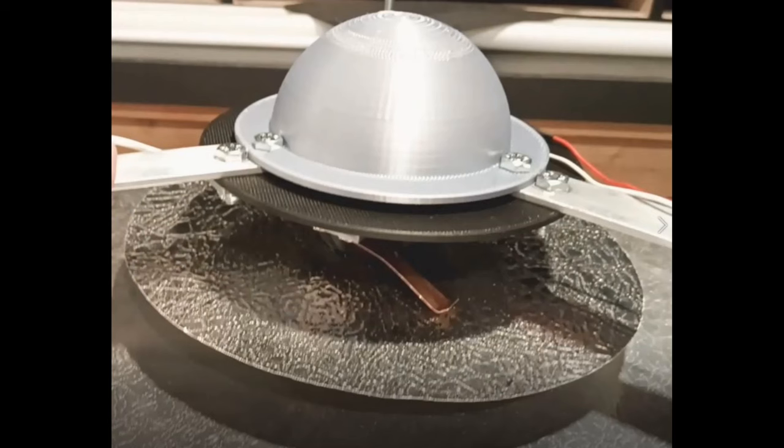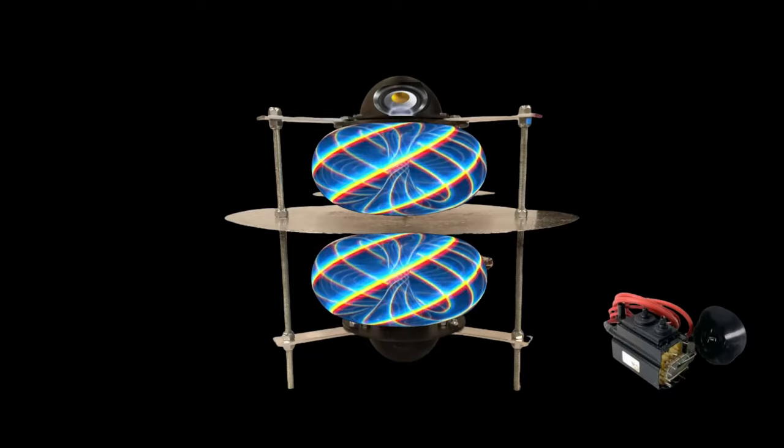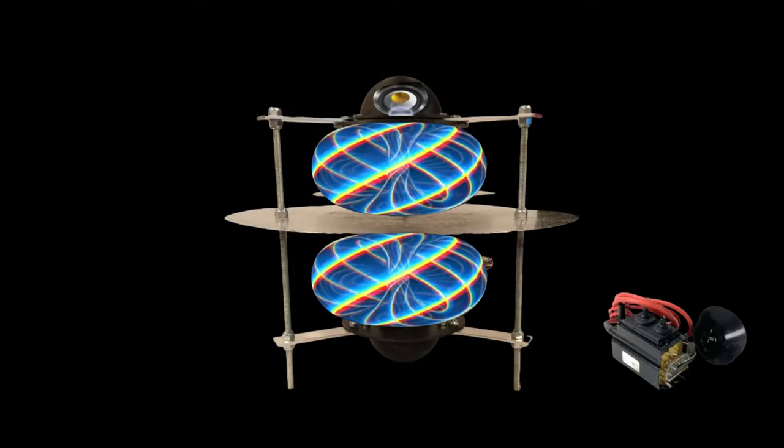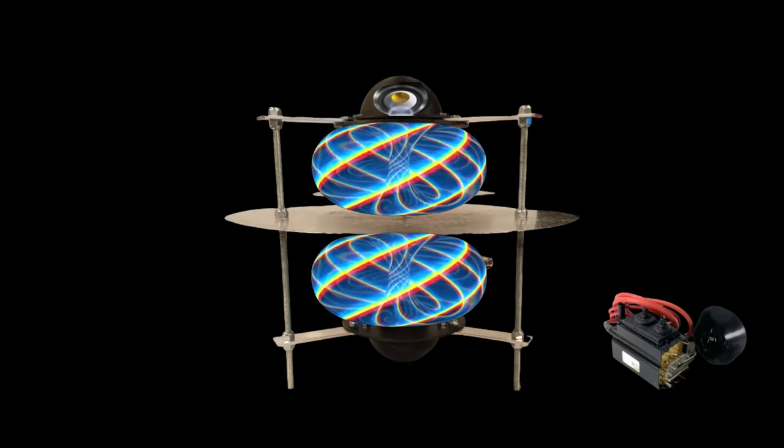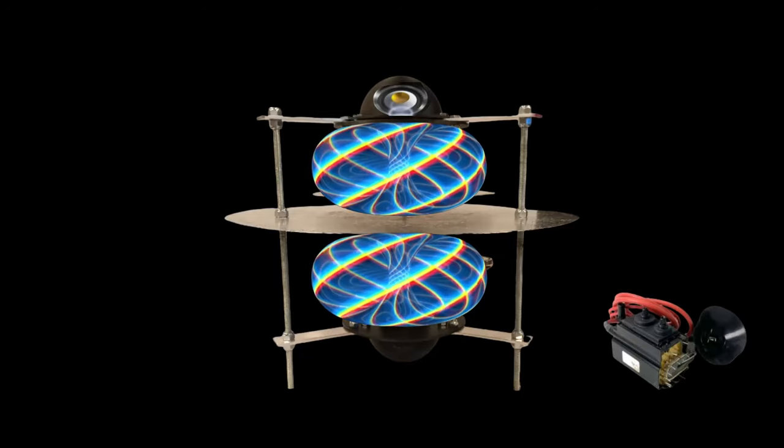Now that we know our high voltage is actually a static charge, let's take a look at what it should look like on your gravity flyer. We have now created two toroidal fields of static electricity. One on the top disc, one on the bottom disc.